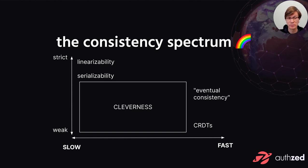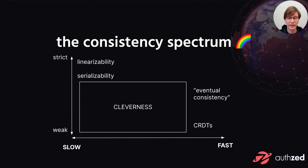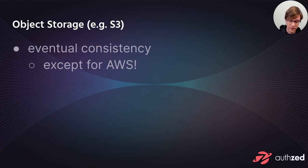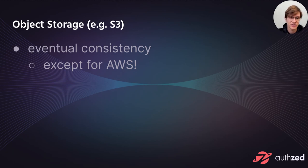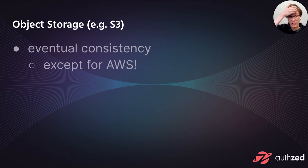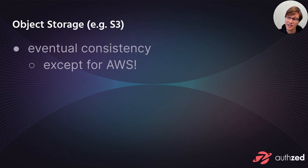Most systems live in the middle ground — what I call the cleverness box. If your problem clearly requires linearizability or clearly suits CRDTs, your choice is obvious. But most systems don't have those extreme problems; they'll live in the middle where interesting tricks can be partially applied to gain benefits without paying costs globally across all data. Now let's jump into some real-world system components that folks are using in industry in the cloud native ecosystem — starting with S3.